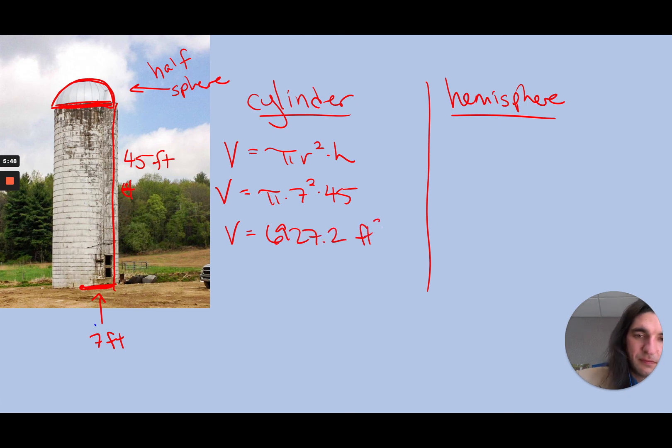Now for the hemisphere, while an entire sphere is 4/3 πr³, a hemisphere is just half of that because it's half a sphere. So let's divide it by 2 at the end. So I'll go 4 divided by 3 times π times 7 to the third divided by 2, and that should be my hemisphere.